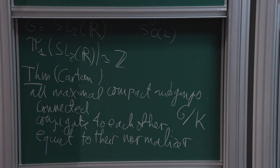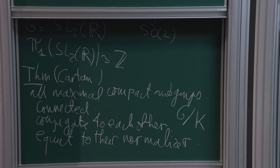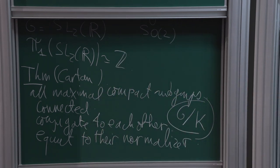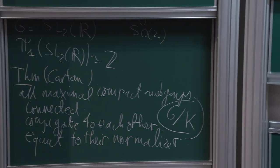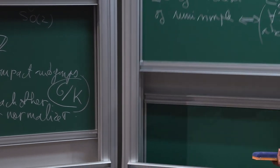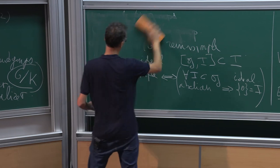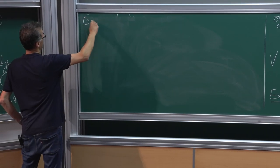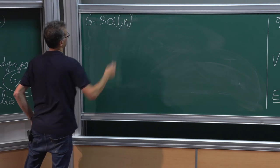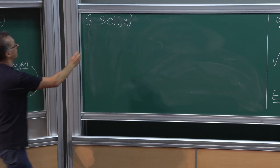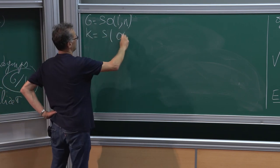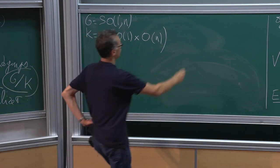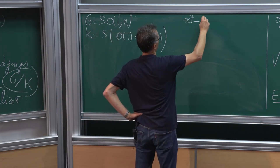Now that we have this object — the quotient G mod K, the set of all maximal compact subgroups — we will do some geometry on it. The motivating example, which everybody who has done a course in Riemannian geometry knows, is G = SO(1,n). In that case, K is the subgroup S(O(1) × O(n)), meaning you preserve a quadratic form of the form x₁² − x₂² − ⋯ − xₙ₊₁², and look at matrices which preserve the decomposition into positive and negative subspaces.